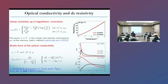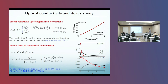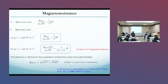We can also calculate the optical conductivity and we get a Drude form, where the scattering rate is proportional to mu, which is in turn proportional to T log T. We get very similar dependence compared to the experimental data.